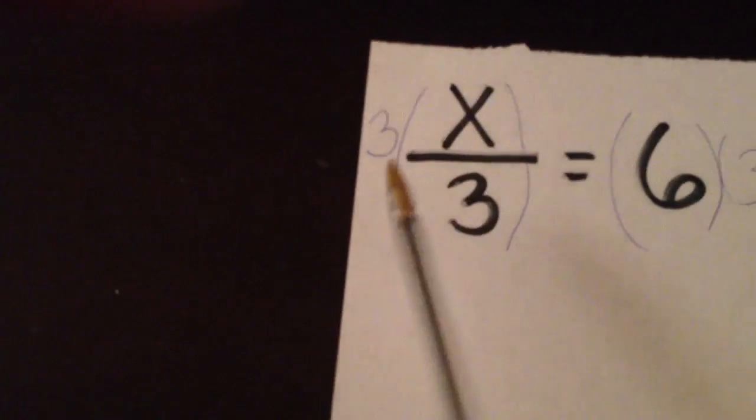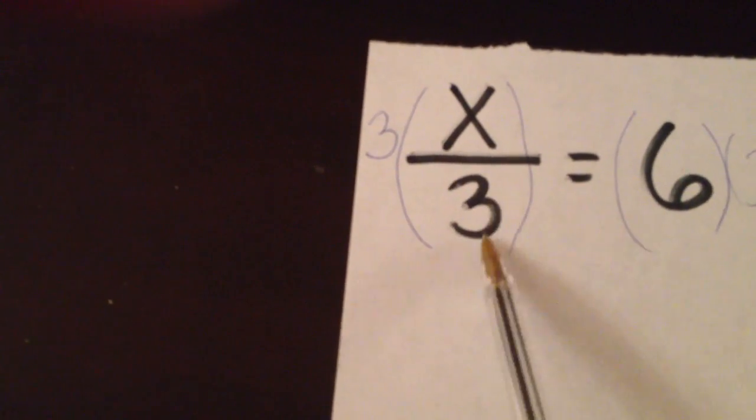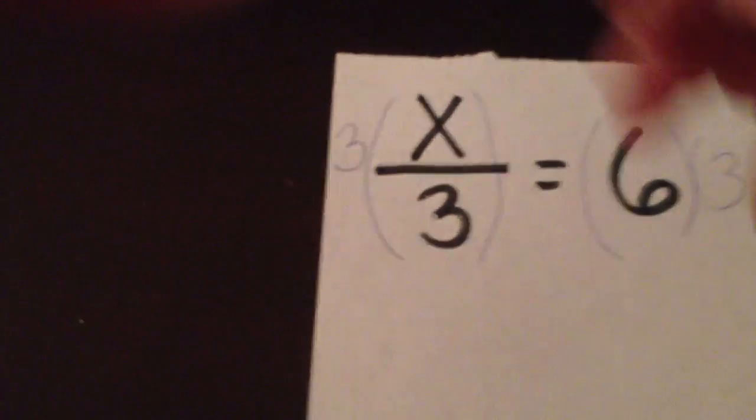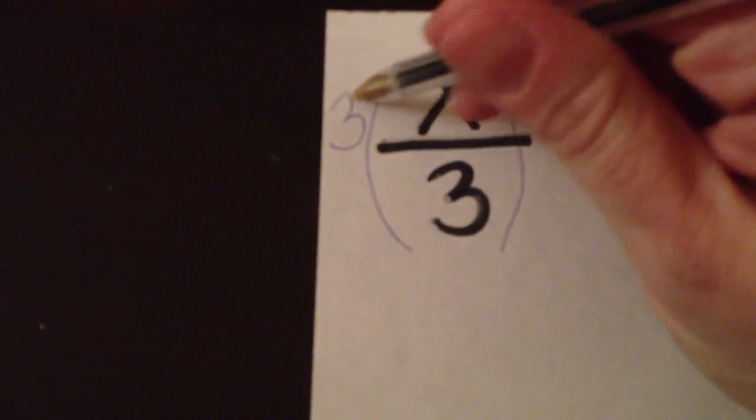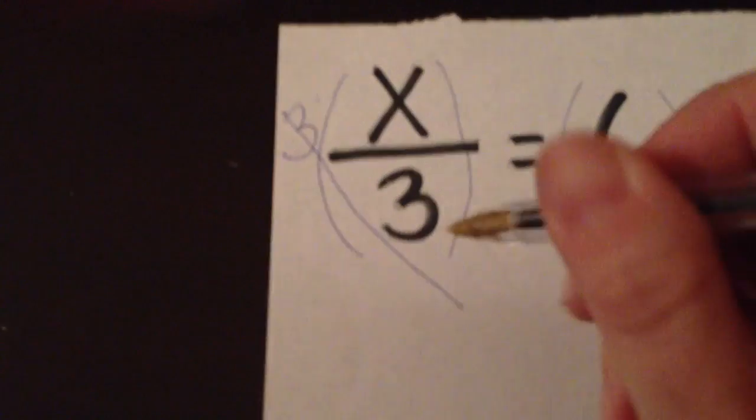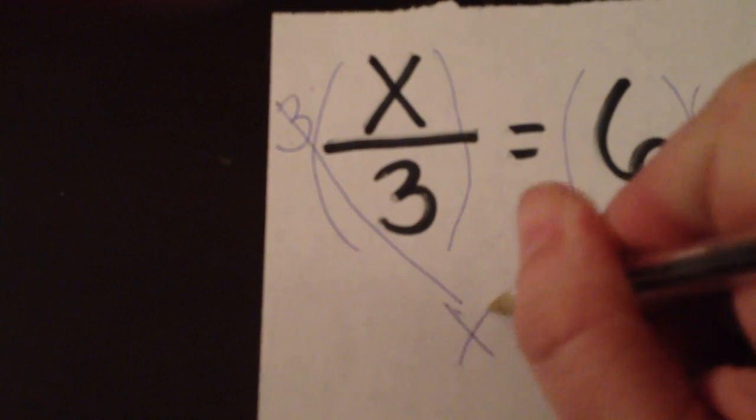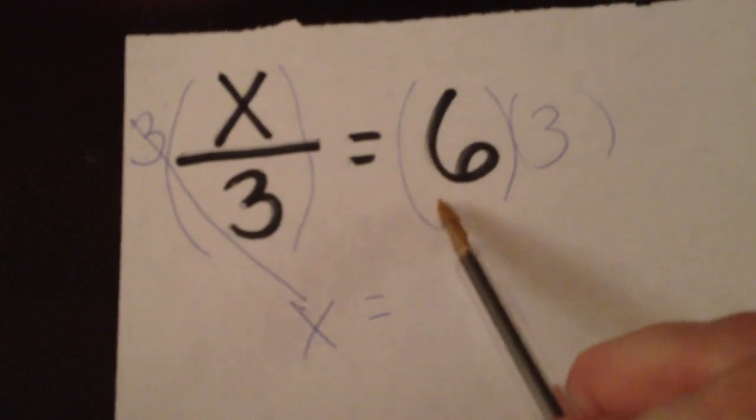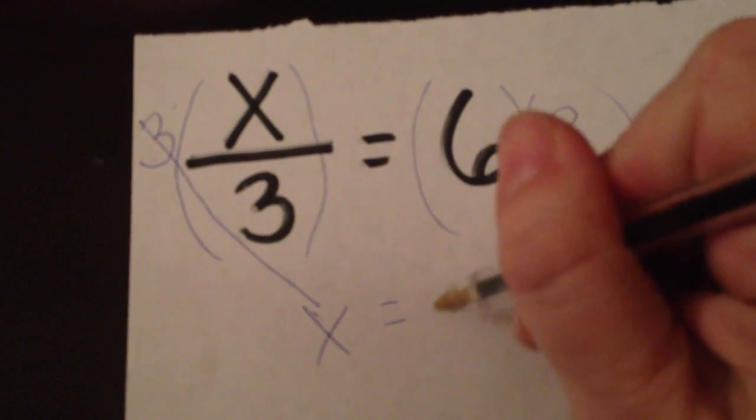This 3 divided by 3 and multiplied by 3 is going to cancel out, so we end up with x only on the left side. On this side, 6 times 3, which is 18.